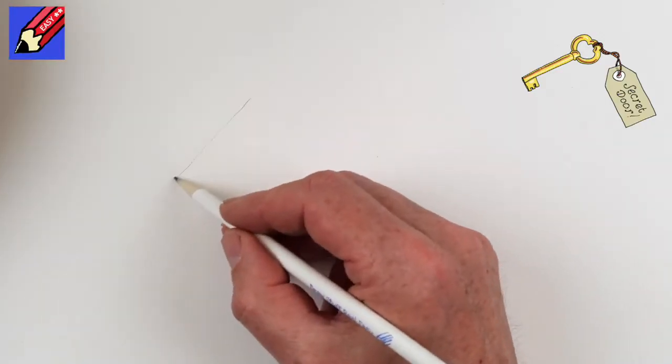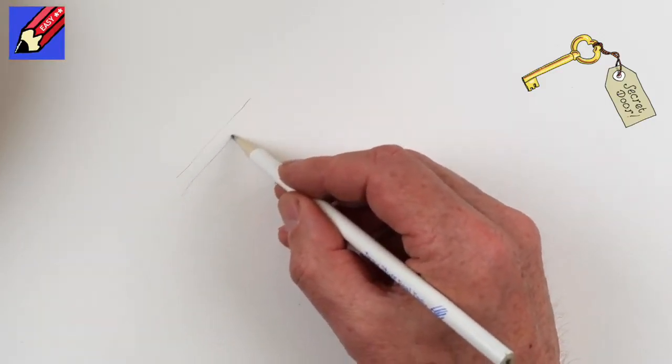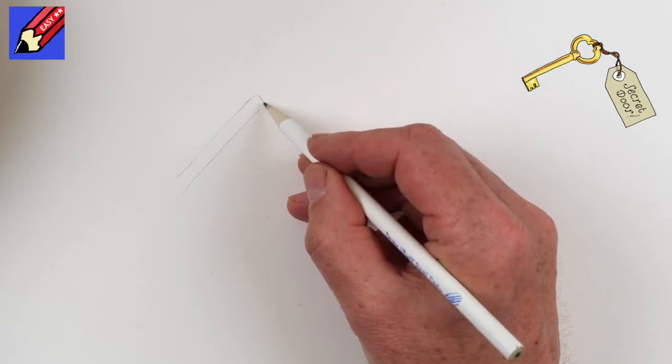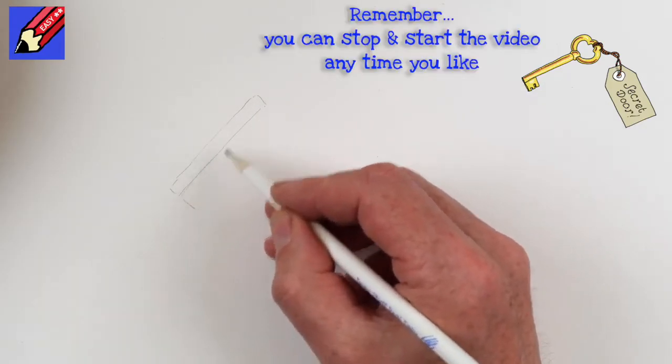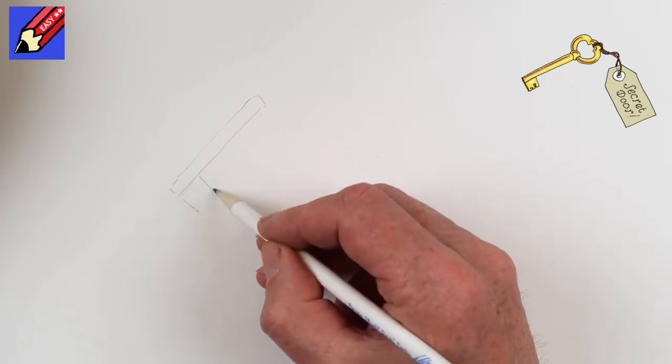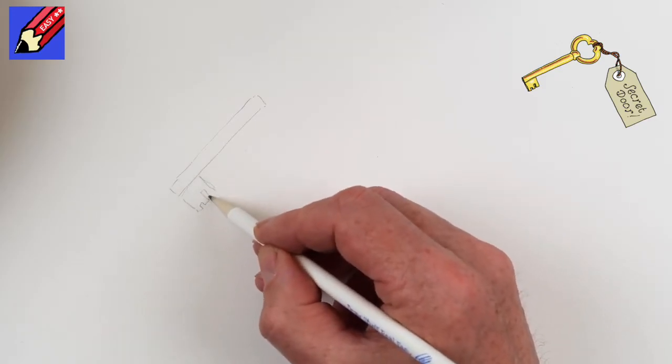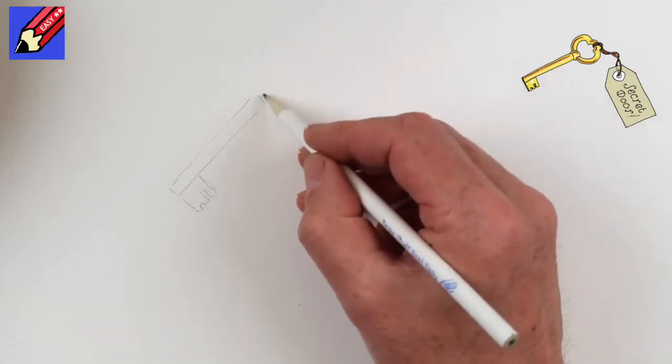I'm going to start by penciling out the shaft of the key to be about like that, and then we want the bit where all the things are—there's probably a name for it.